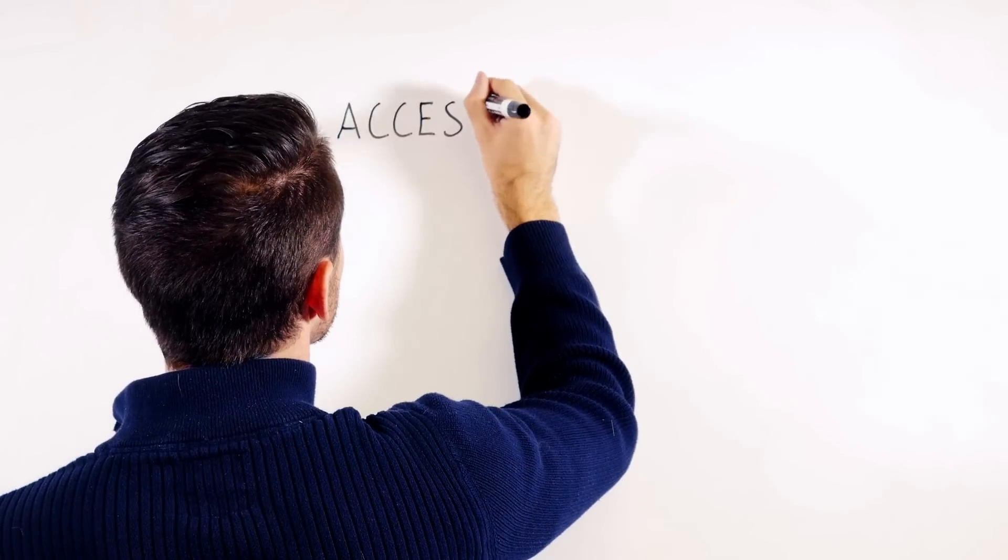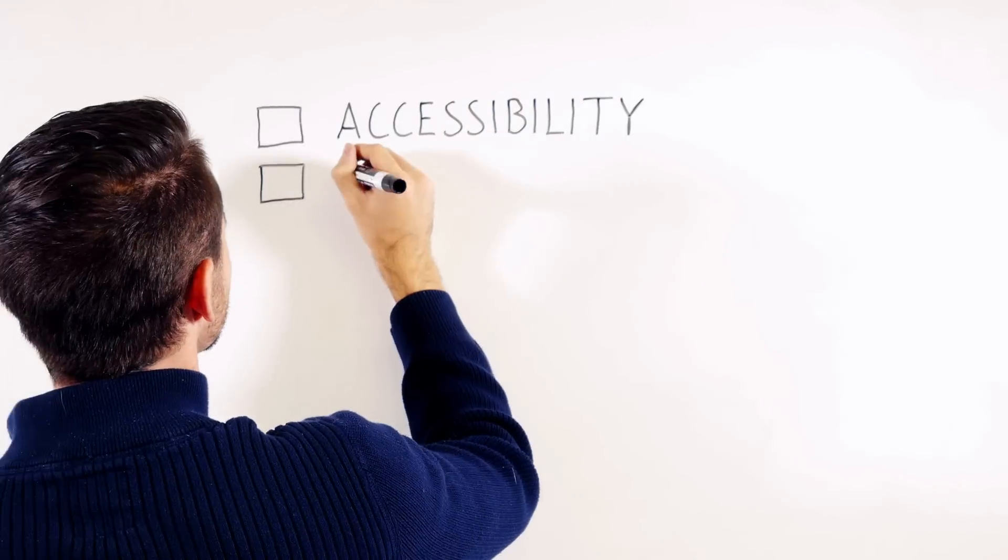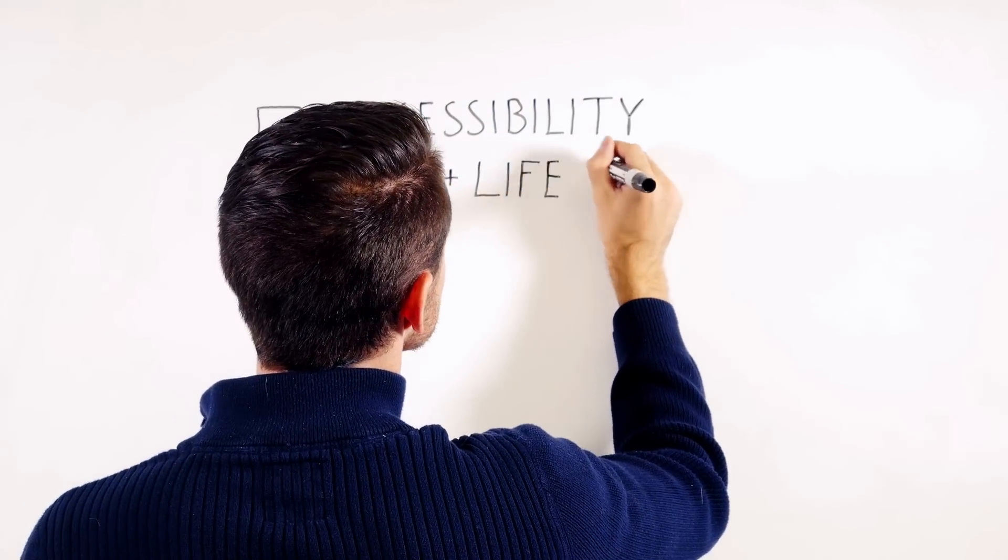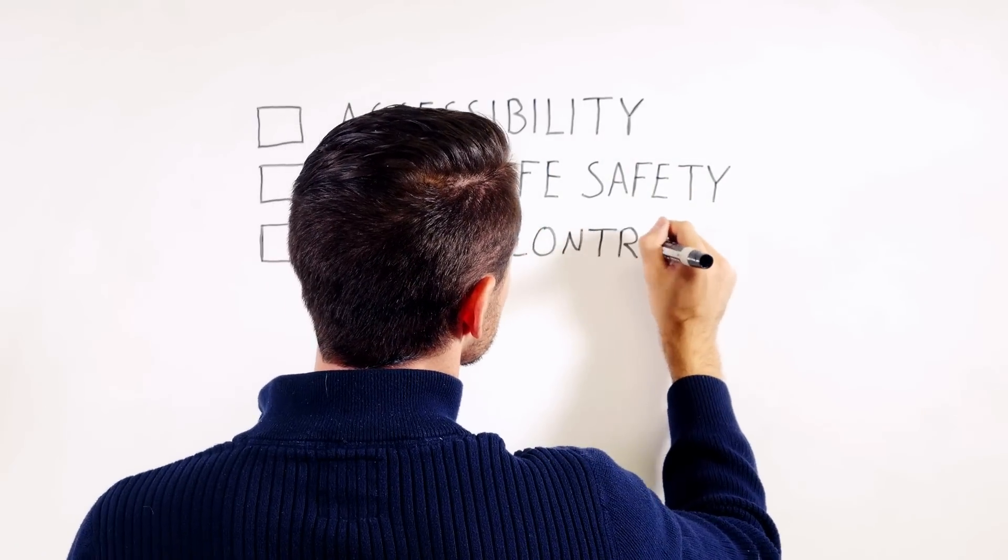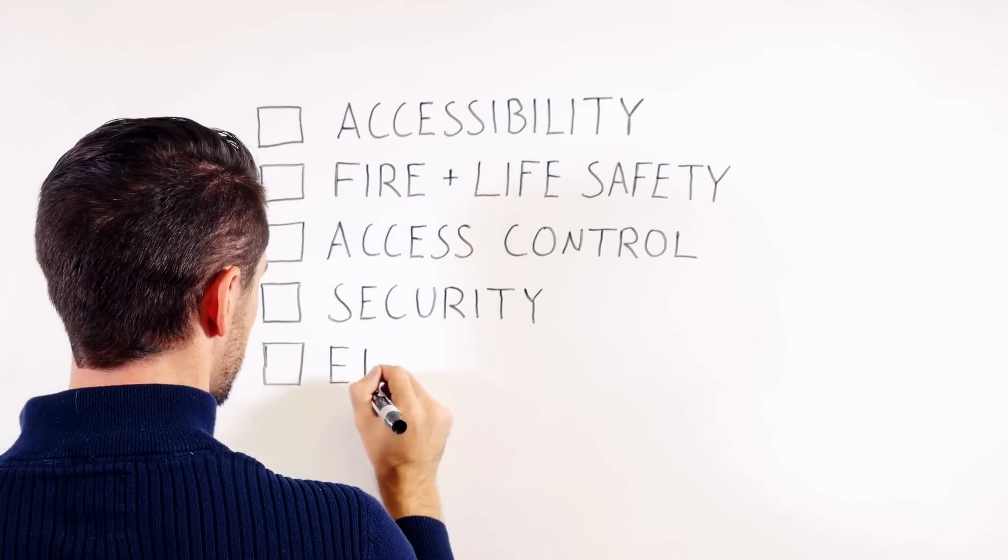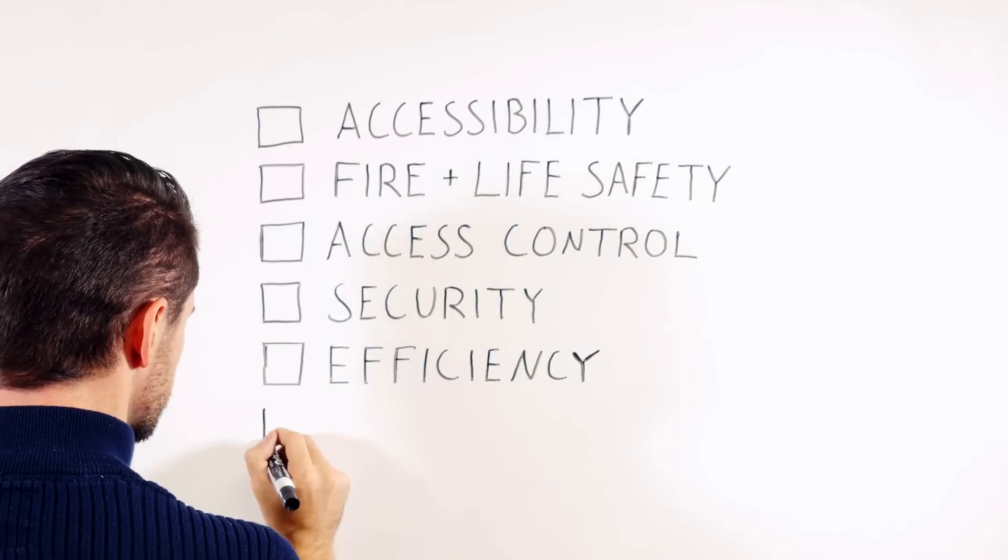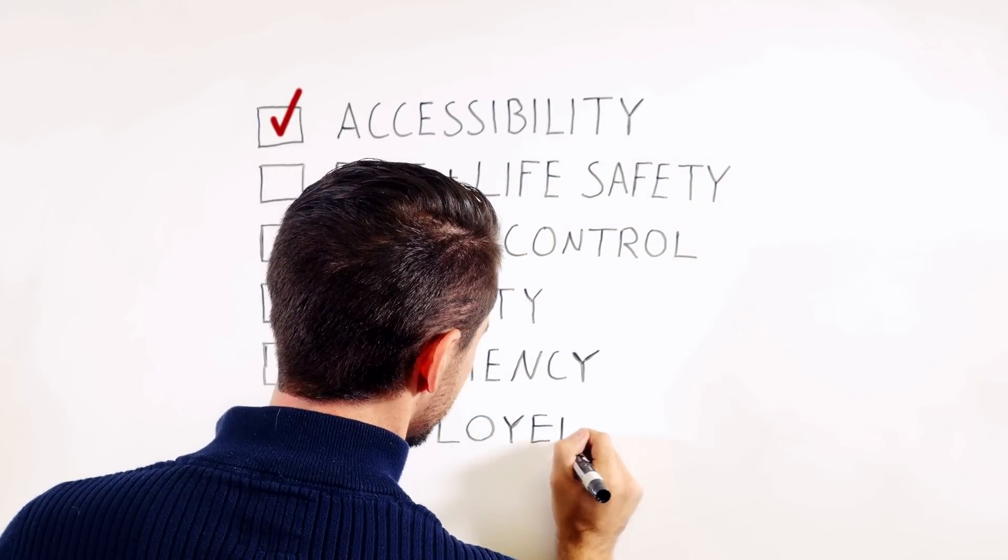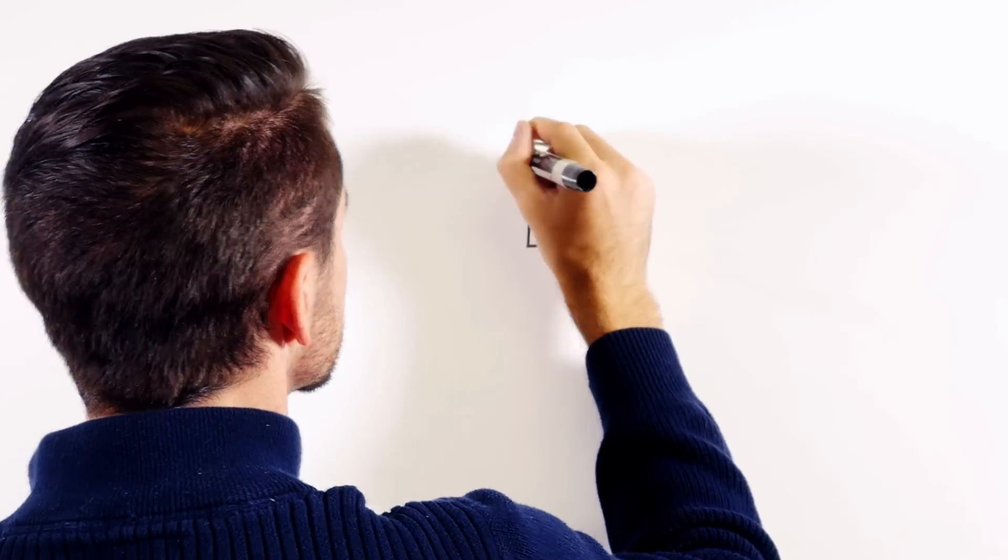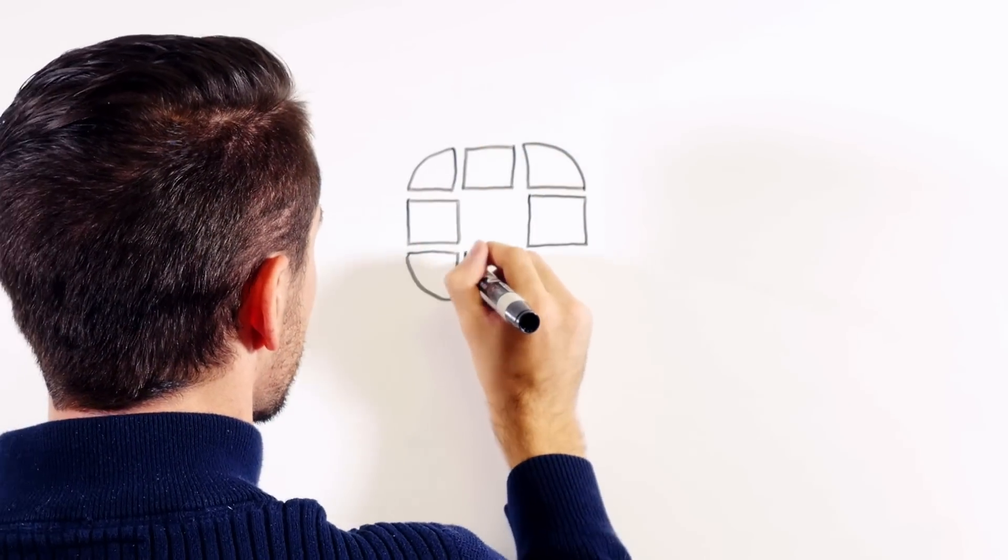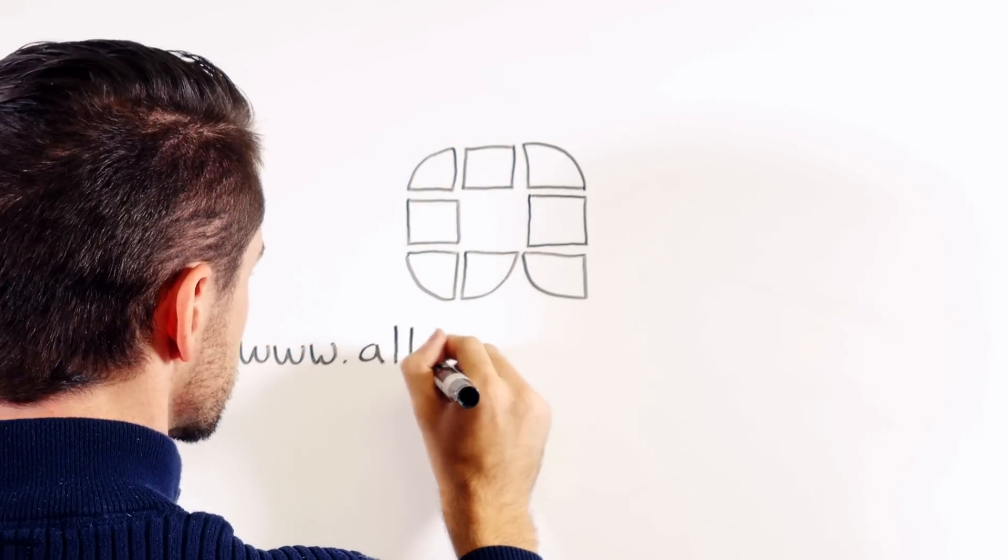By the way, the A156.19 standard describes the minimum performance standards. Most manufacturers, such as LCN, offer low-energy automatic operators with optional functionality to allow facilities to make their openings work for them in terms of accessibility, fire and life safety, access control, security, efficiency, and employee productivity. To watch more videos, visit our training page at www.allegion.com.